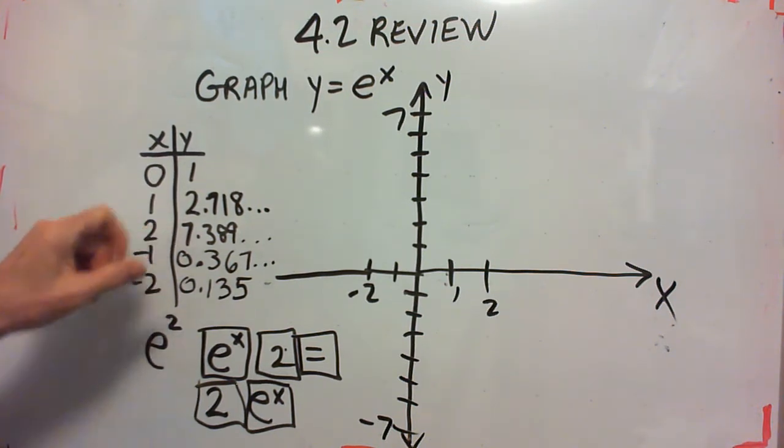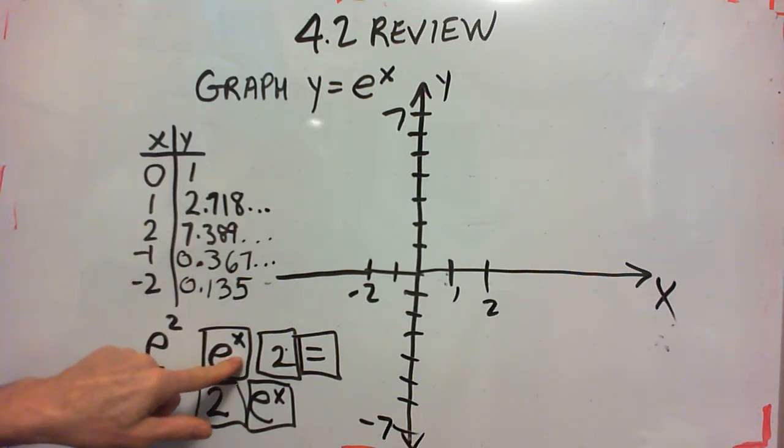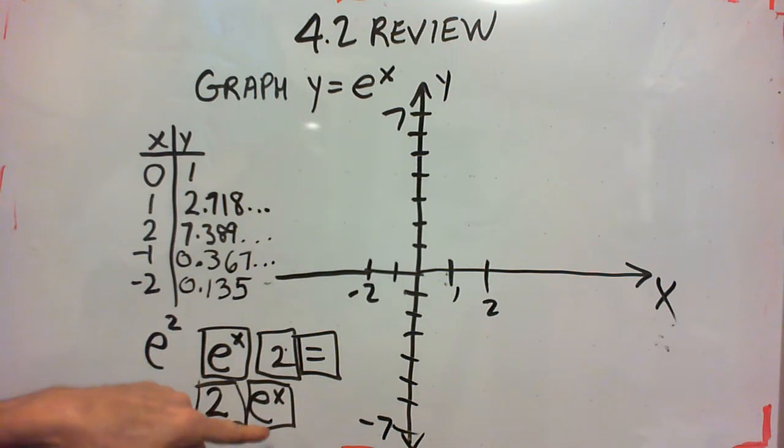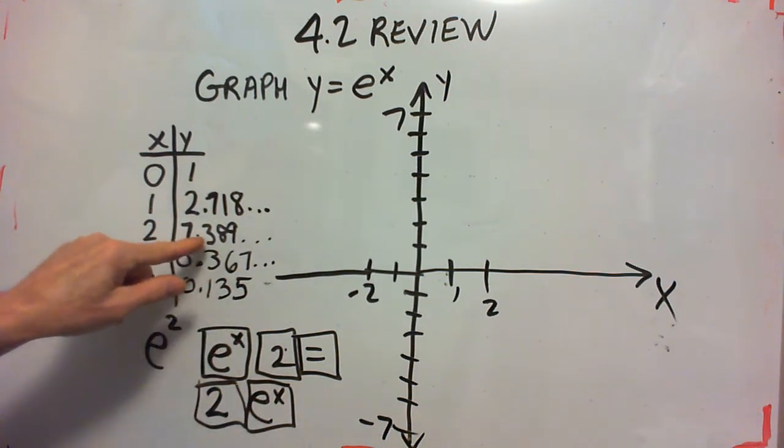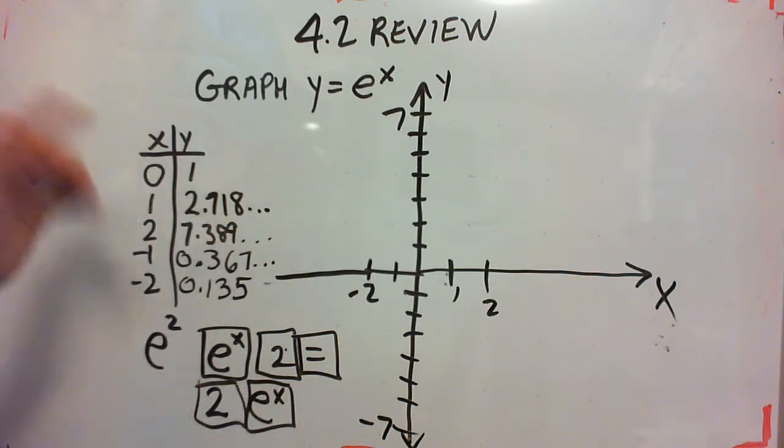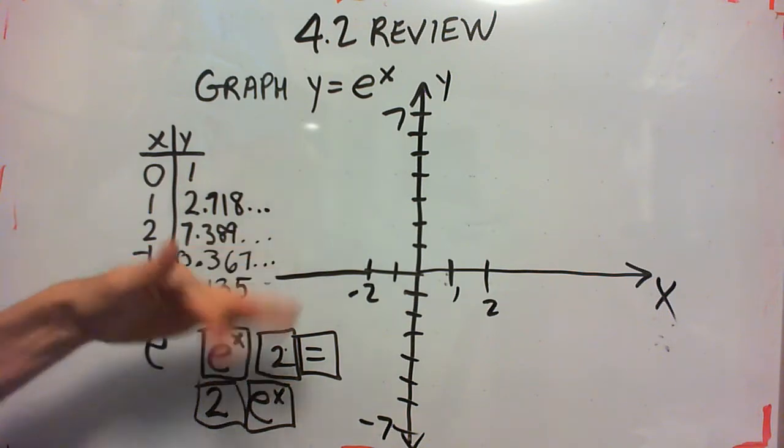Putting 2 into your calculator after the e to the x function or before, depending on your calculator, you should get 7.389 and then a bunch of digits after that because it repeats forever.